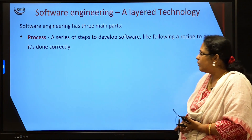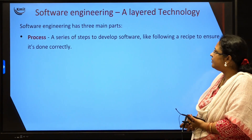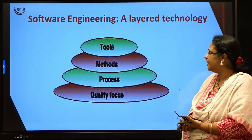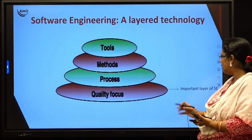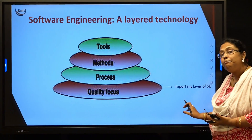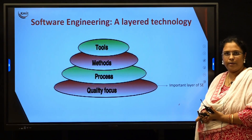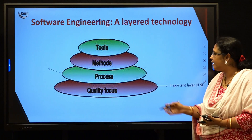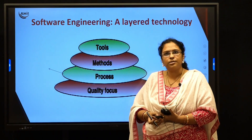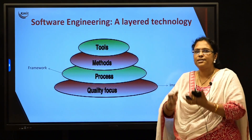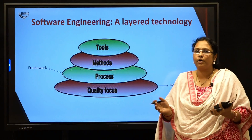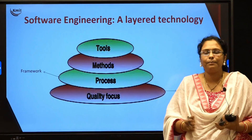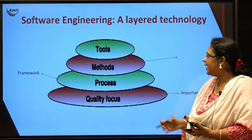Let us briefly go over everything once, looking at the diagram again. Quality is basically an important layer of software engineering — it is the bedrock. The second one is the process. Process is like a framework which tells you the step-by-step procedure for developing your particular software.